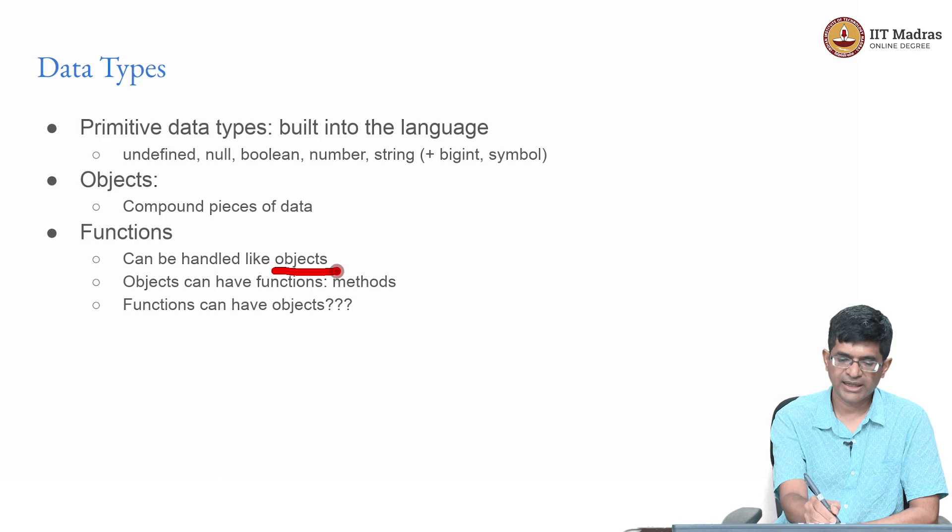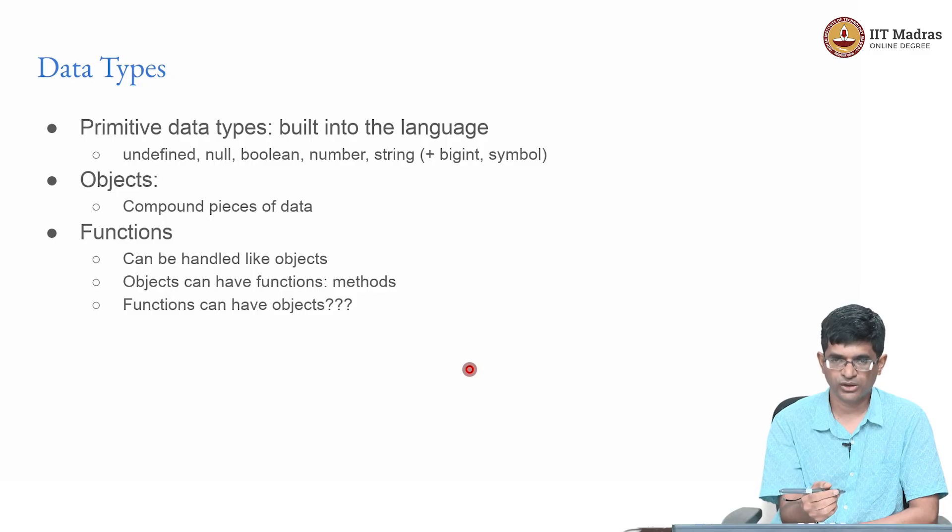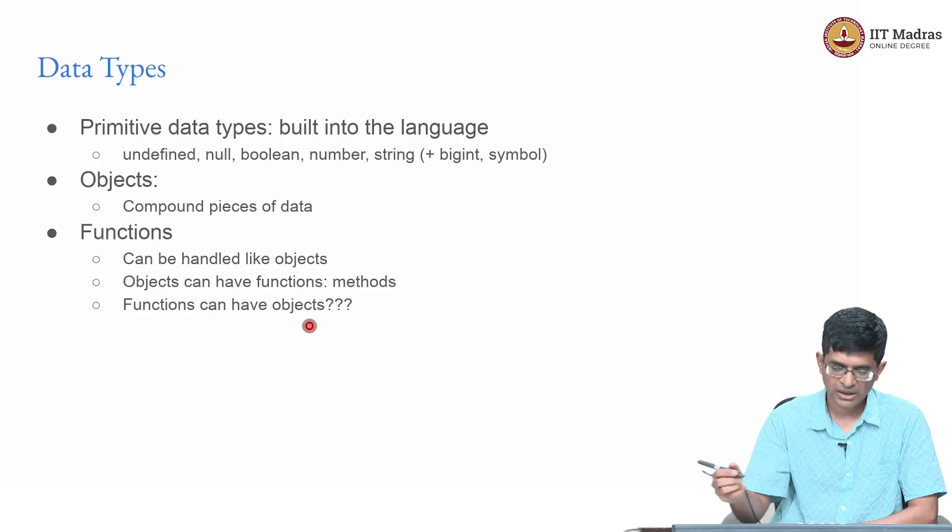The interesting thing is you can have objects that can themselves have functions inside them. For those of you who are familiar with object oriented programming you would know that this is basically called the method of the object, of the class. The interesting thing in JavaScript is a function can have an object associated with it.